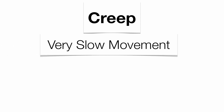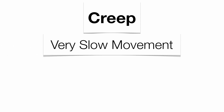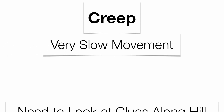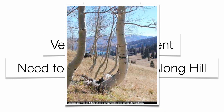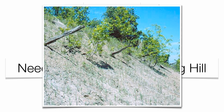Creep is going to be the slowest of all movement — very hard to measure because of its slow movement. You want to look at clues along the hillside, such as curved tree trunks. Trees are carried downslope but re-correct themselves as they grow because they want the most direct sunlight. If fence posts are starting to become horizontal to the hillside, they're being brought downslope. It's a very slow form of mass movement.